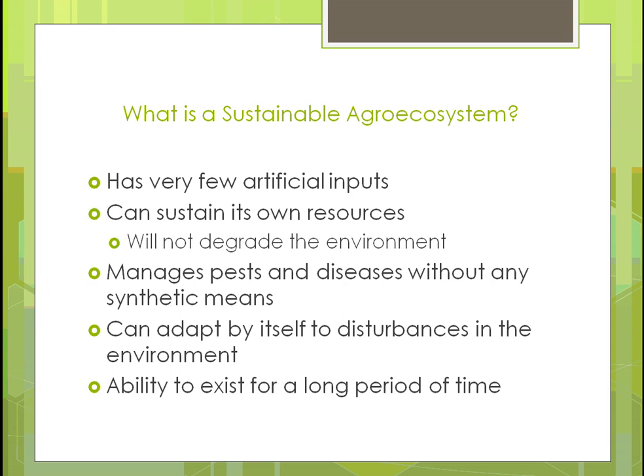A sustainable system can adapt to disturbances, so if pests or diseases come in, you can control them in natural ways by allowing a little bit and making adjustments without using pesticides or herbicides. Also, sustainable means you're able to exist with whatever you decide to use for a long period of time — not just year to year, but many, many years.